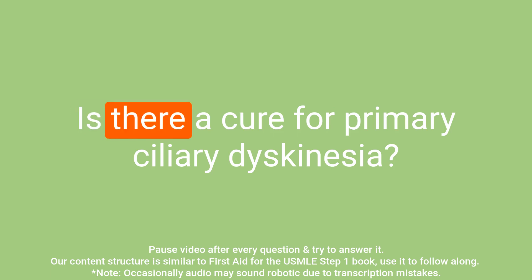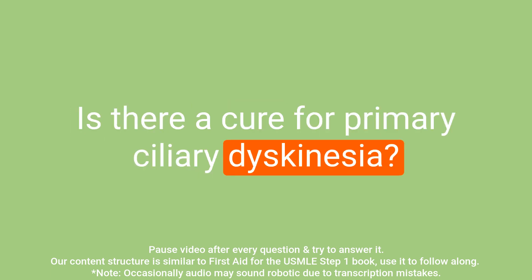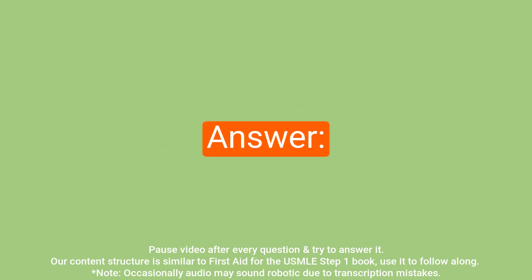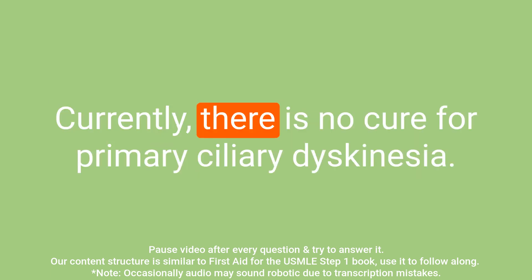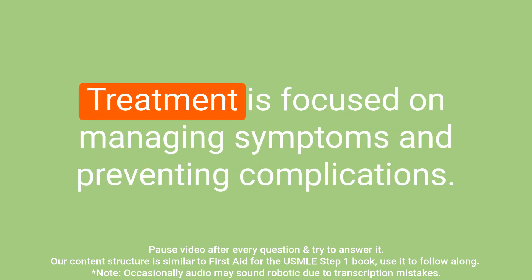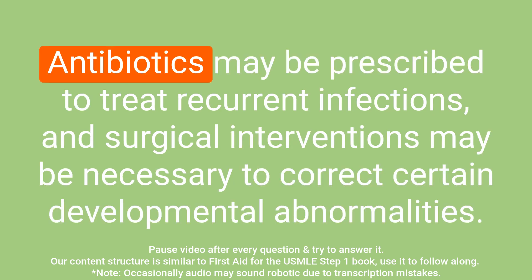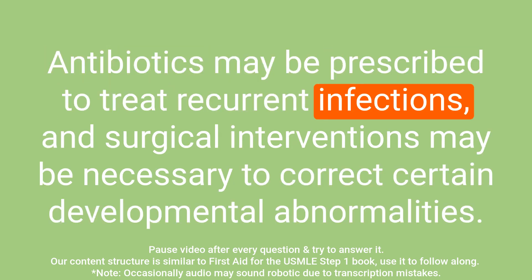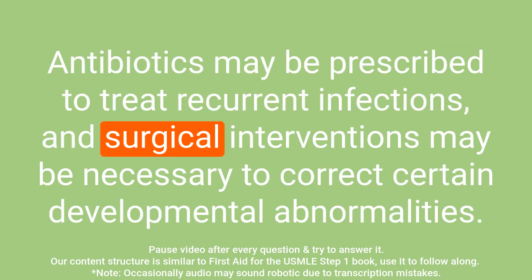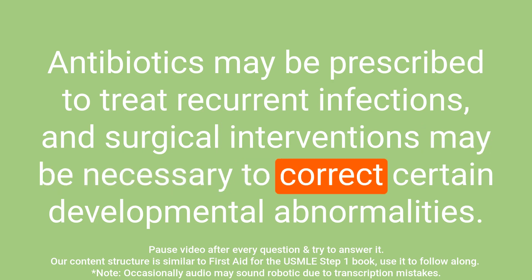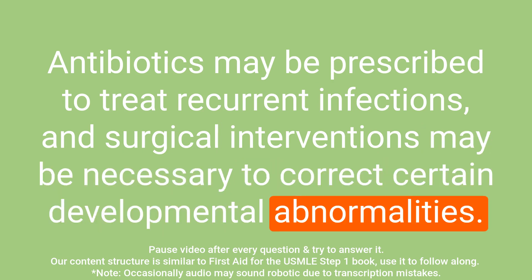Question: Is there a cure for primary ciliary dyskinesia? Answer: Currently, there is no cure. Treatment is focused on managing symptoms and preventing complications. Antibiotics may be prescribed to treat recurrent infections, and surgical interventions may be necessary to correct certain developmental abnormalities.